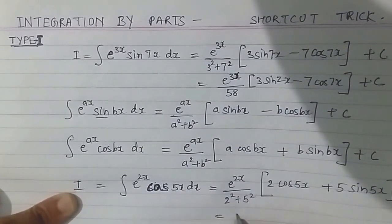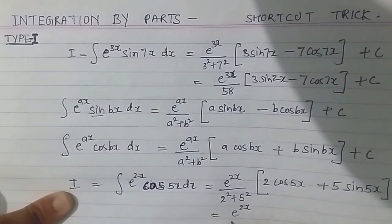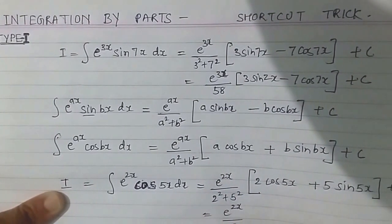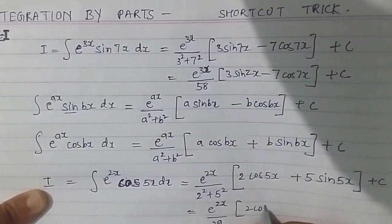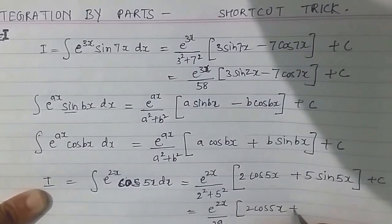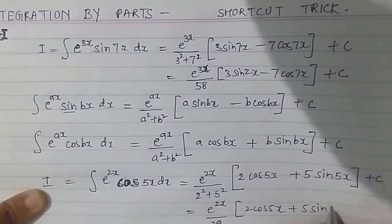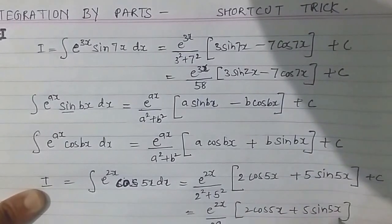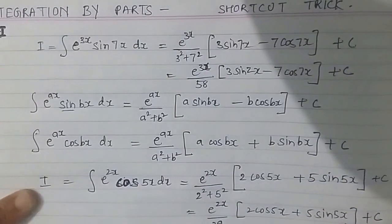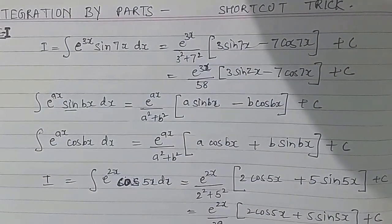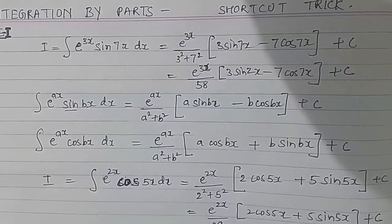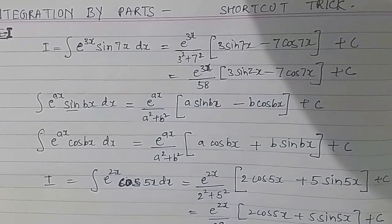And this will become e raised to the power 2x... this is 4 plus 25, so 29... 2 cos 5x plus 5 sin 5x plus c. So that's all in this trick. If you like my video and my trick, share it with your friends and subscribe to my channel. Thank you.